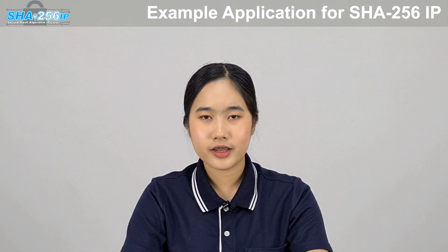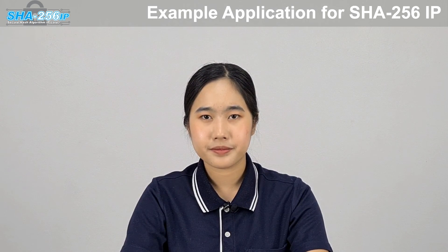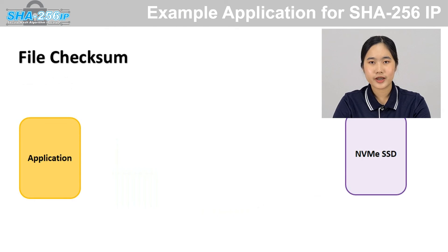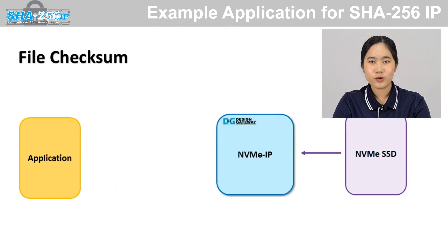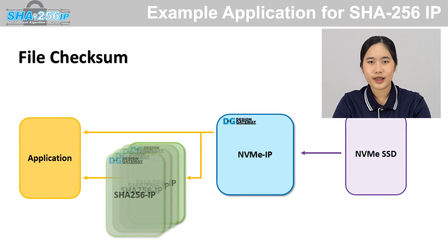Another example is for using with our data storage IP. When a user requests to read data from SSD, you can connect with our NVMe IP and hash the read data with SHA-256 IP. And if you need to improve the performance, you can multiply the SHA-256 IP like this.